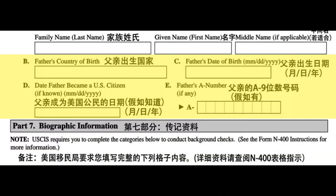B. Father's country of birth. C. Father's date of birth: month, day, year. D. Date father became a U.S. citizen, if known: month, day, year. D. Father's A number, if any.